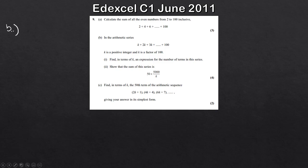In this arithmetic series we have K plus 2K plus 3K, all the way up to 100. We know K is a positive integer and also a factor of 100. We need to find, in terms of K, an expression for the number of terms in this series. The easiest way is to consider the very last term - we don't know which term number that is, so let's call it N.